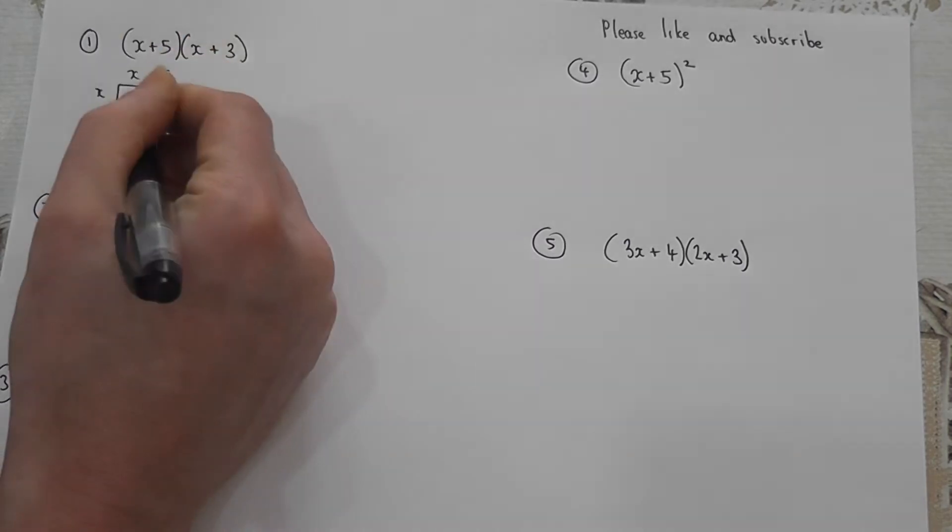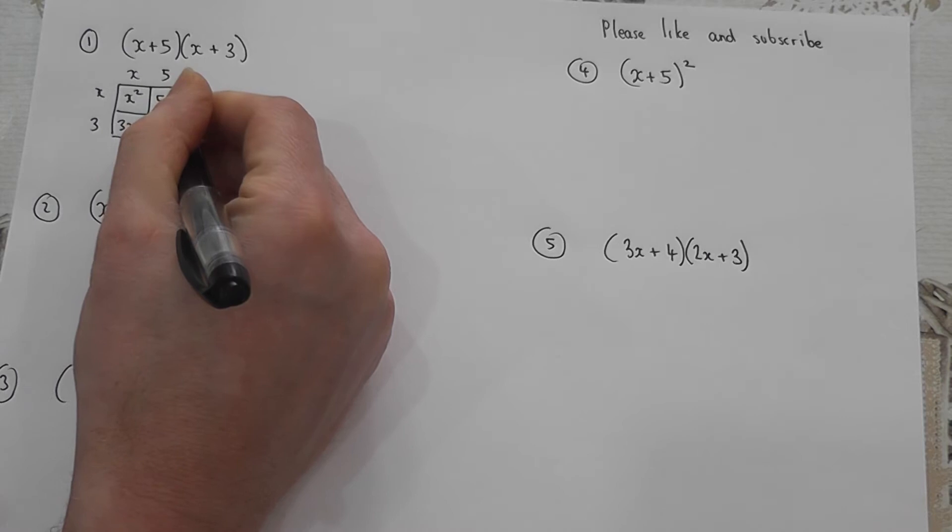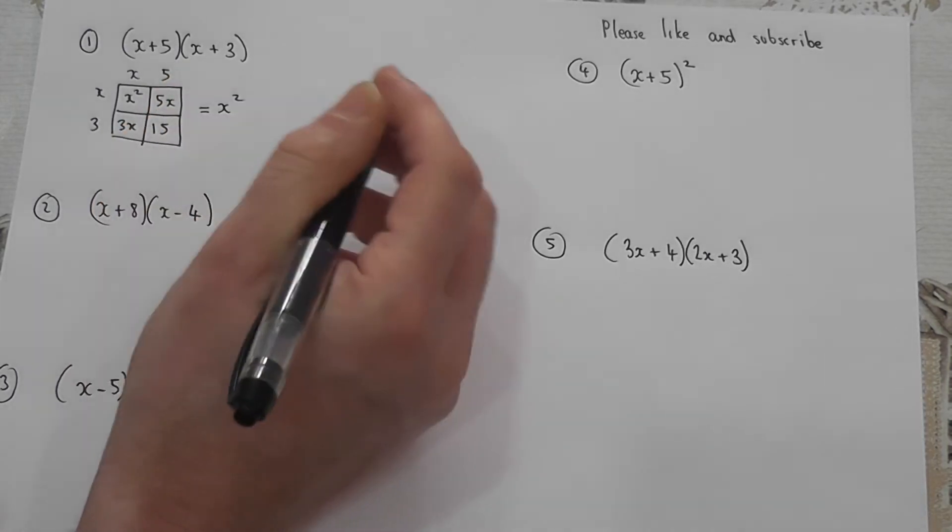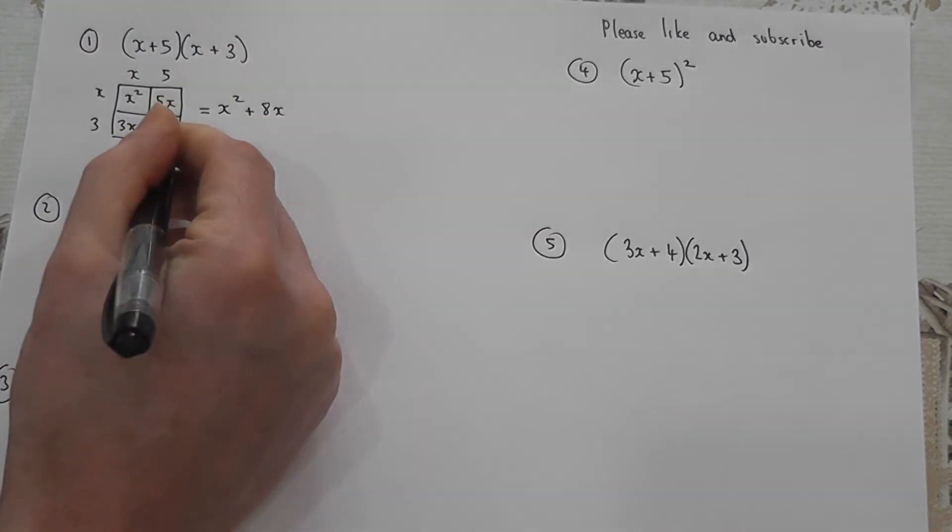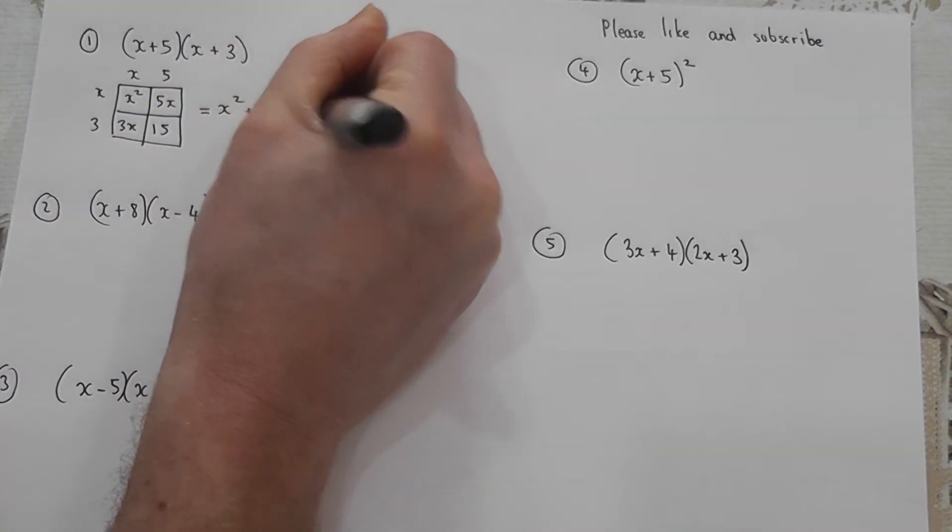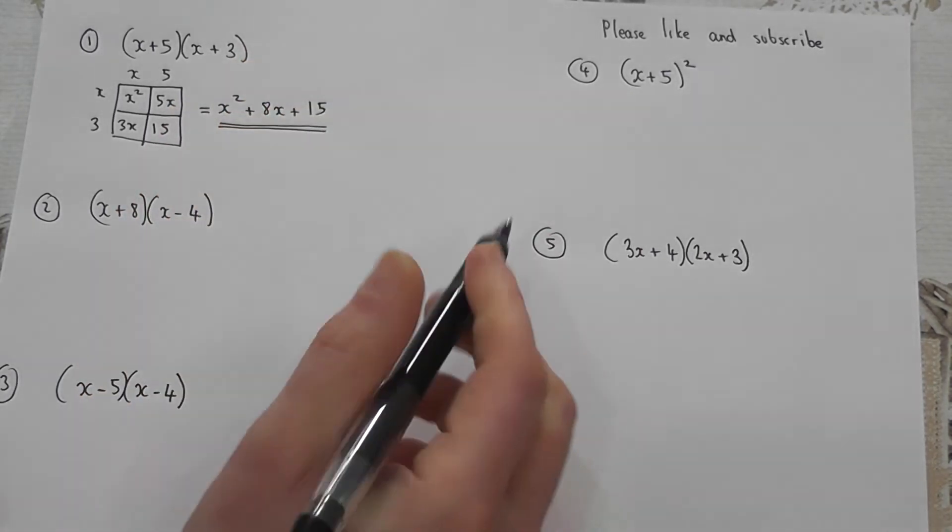And we then get an answer where we have to add together the four terms in the grid. So the final answer is we've got an x squared term. We have a 5x and we have a 3x. Now 5x plus 3x makes an 8x. And there's a 15 here so plus 15. And that is the expanded form of those two brackets.